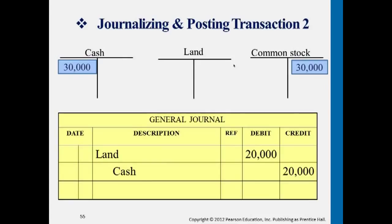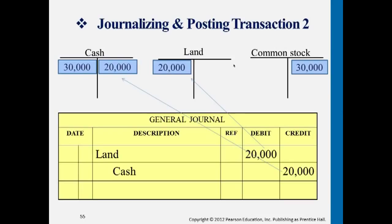If we have an additional entry, what does this second entry mean? We're giving away the cash in exchange for a piece of land worth $20,000, and both of these accounts are under the asset category. There are two different asset accounts: one account is being increased by the value of the land ($20,000), and the cash account is being reduced because we're using the money to purchase that piece of land — changing one type of asset for another.